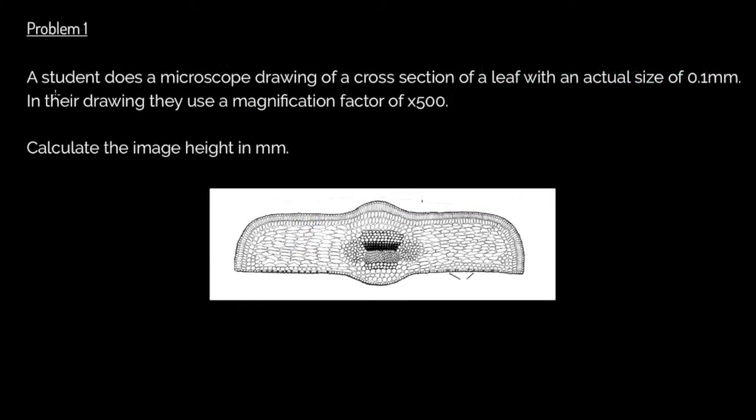Problem one, pretty simple, let's hope. A student does a microscope drawing, much as you guys will have done, in this case of a cross section of a leaf with an actual size of 0.1 millimeters. So we're working in millimeters here. In the drawing, they use a magnification factor of times 500. So we've already got two thirds of the variables we need in our equation. So therefore, we can go on to calculate the actual image height.